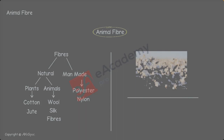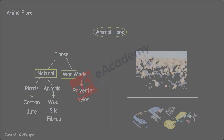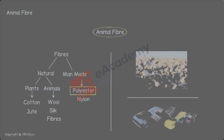They are also referred to as synthetic fibres. Let us revise: the two types of fibres from which fabric is produced are natural fibre and man-made fibre. Natural fibres are produced from plants and animals. Man-made fibres are used to produce fabrics like polyester and nylon.